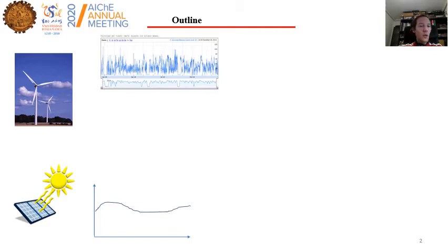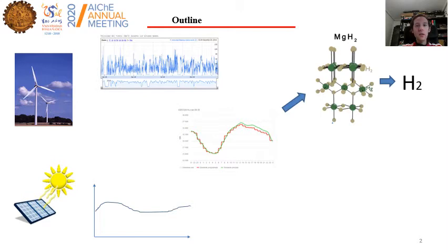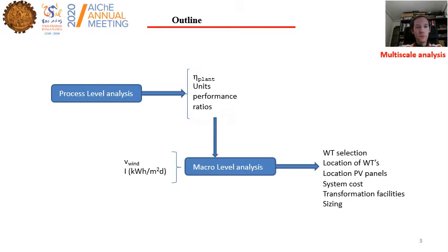We are well aware that even though we have enough energy in the form of solar or wind, the variability affects the way we can meet the demand. In order to do so, apart from integrating different renewable resources, it is possible to store this energy in the form of chemicals. Among them, we can consider the production of metal hydrides, that after the release of hydrogen, that hydrogen can be used in fuel cells in order to produce power.